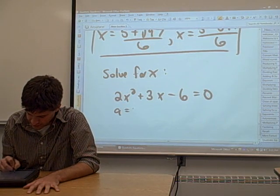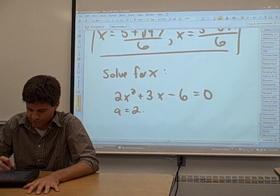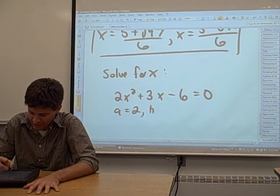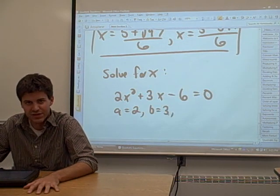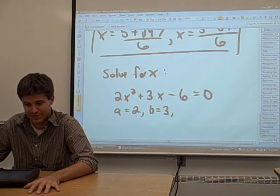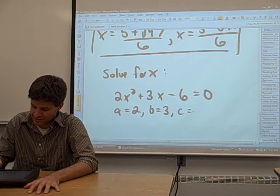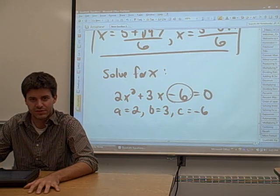In this case, a equals 2. A is always the coefficient on the x squared term. b is 3, the coefficient on the x term. And c is negative 6, the constant term.